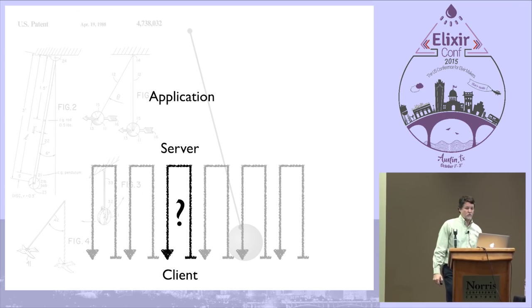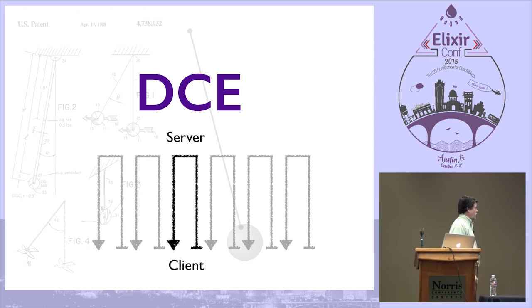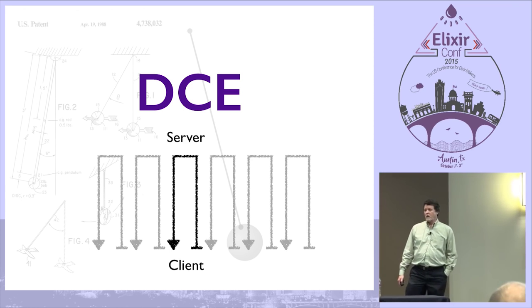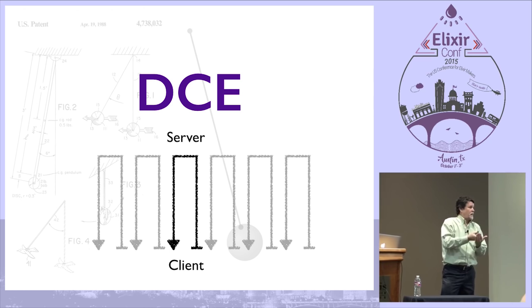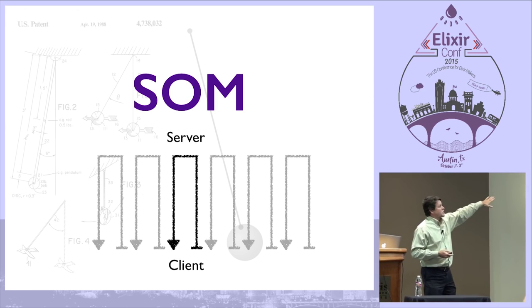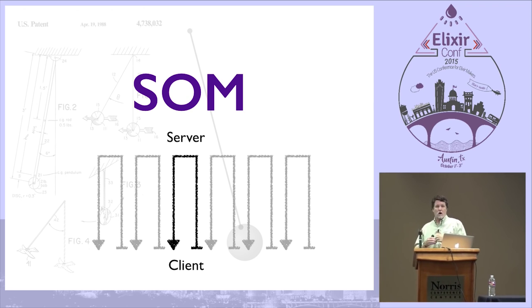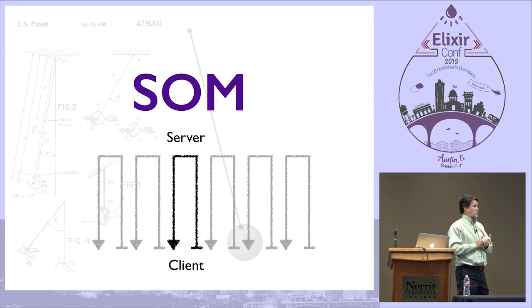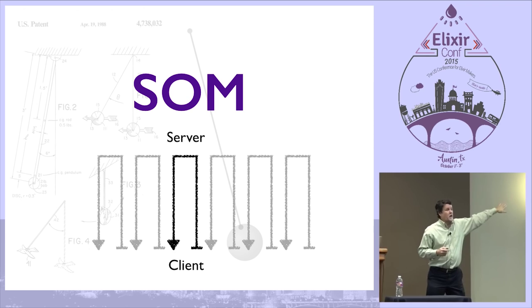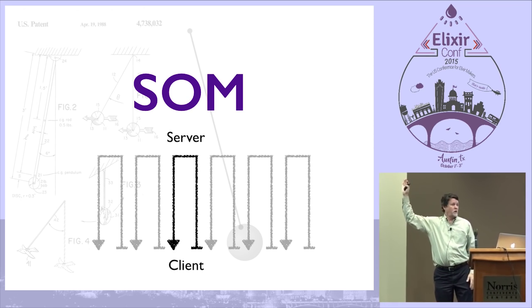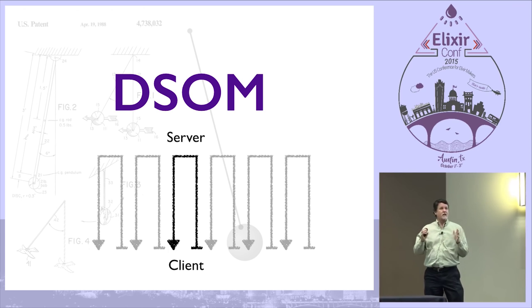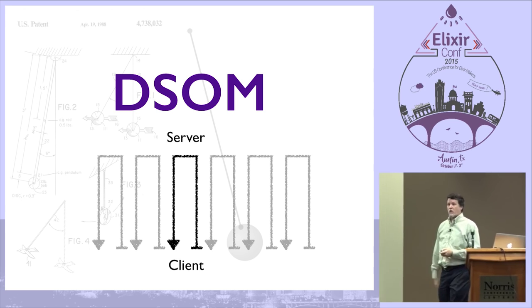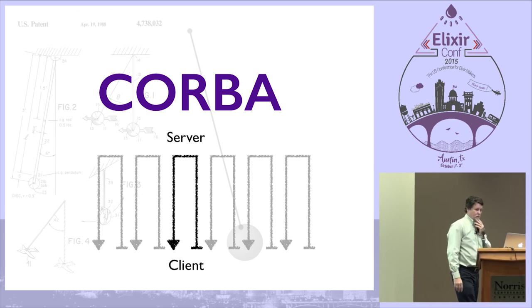IBM was taking many different cracks at this problem. First we had Distributed Computing Environment, then after C and C++ we had the System Object Model — a terrible idea that we doubled down on by trying to make it distributed. Then we said the reason it wasn't successful was that it couldn't talk to the other object brokers in the industry. And we failed.